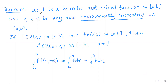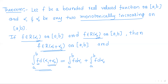The first property: let f be a bounded real-valued function on the closed interval [a, b], and let α₁ and α₂ be any two monotonically increasing functions on [a, b]. If f is Riemann-Stieltjes integrable with respect to α₁ and also with respect to α₂, then f will be Riemann-Stieltjes integrable with respect to α₁ + α₂, and the integral of f with respect to α₁ + α₂ equals the integral with respect to α₁ plus the integral with respect to α₂.